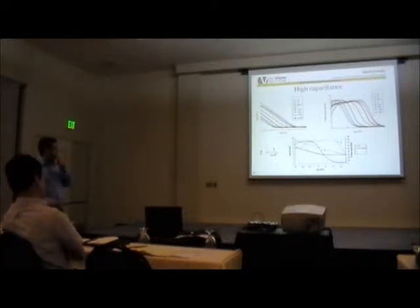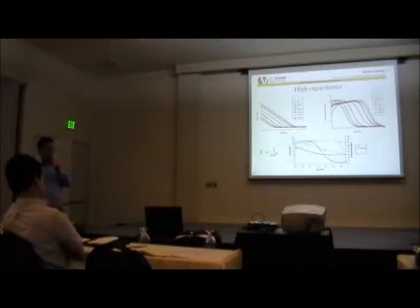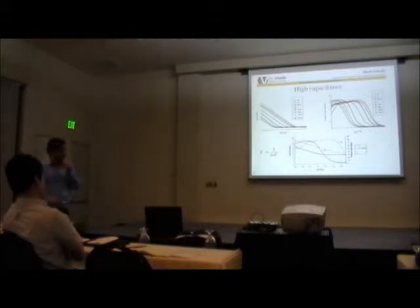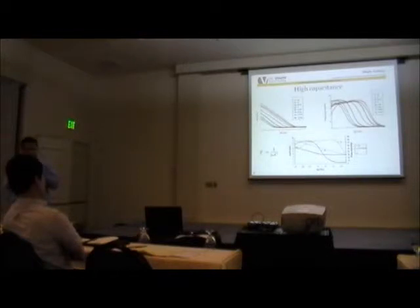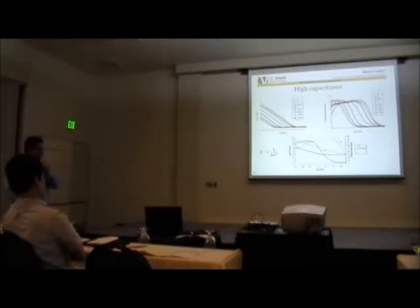Considering this equation, which shows that impedance is inversely proportional to the capacitance — by decreasing the impedance, we know that the capacitance has increased, and the main result is that we have a high surface area. By increasing the deposition time, impedance decreased, meaning that we have a high surface area even though it's a smooth film at a nano-scale roughness.